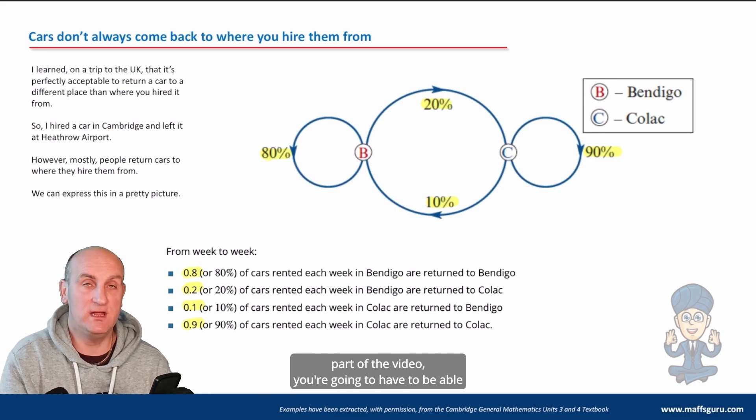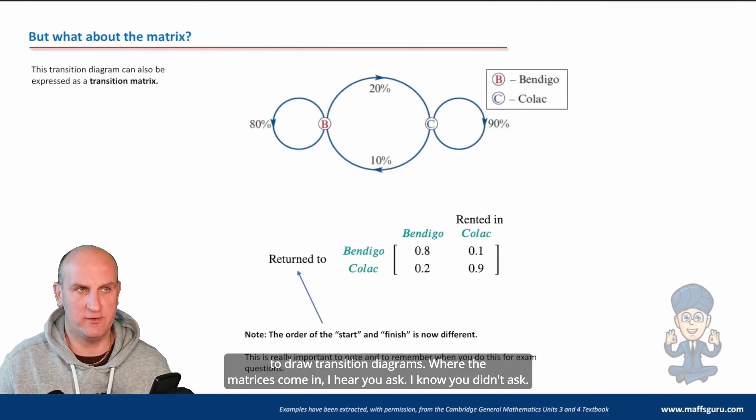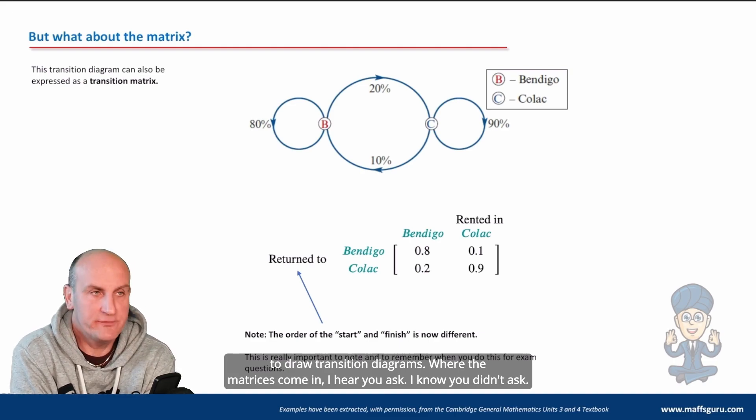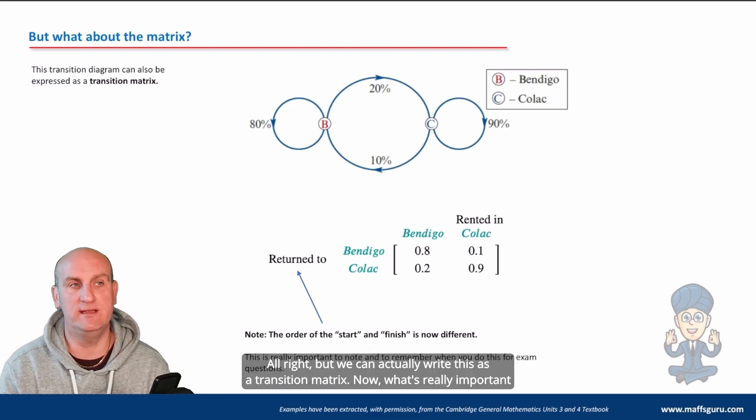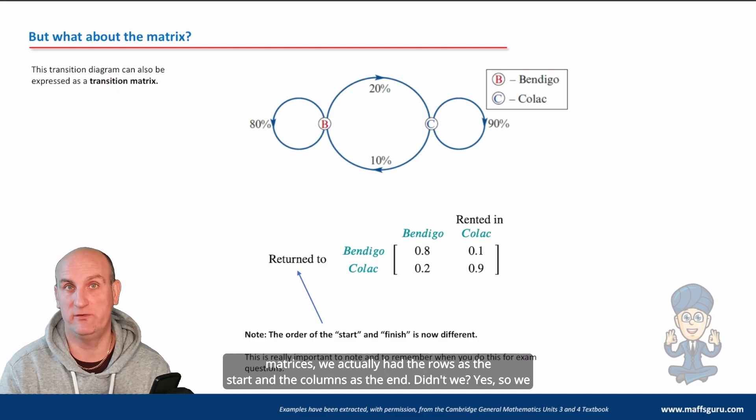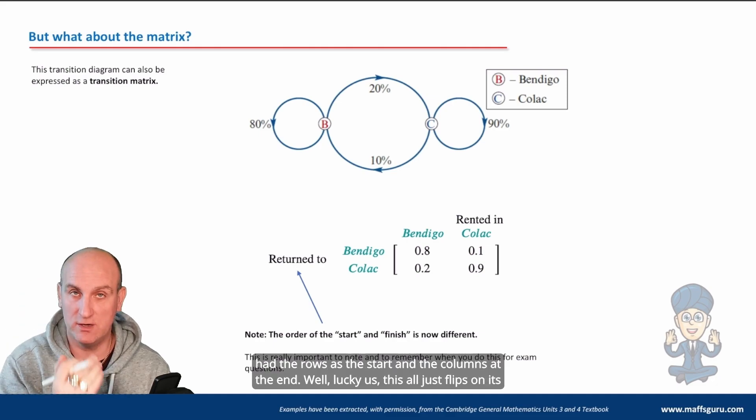So this part of the video, you're going to have to be able to draw transition diagrams. Where do matrices come in? I hear you ask. I know you didn't ask. All right. But we can actually write this as a transition matrix. Now, what's really important is the way these things are set up. Now, in the previous section, when we did communication matrices, we actually had the rows as the start and the columns as the end, didn't we? Yes. So we had the rows as the start and the columns at the end. Well, lucky us, this all just flips on its head now. Why? Because our columns are our start, our rows are our end.